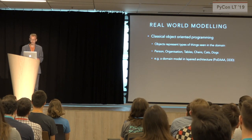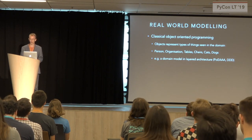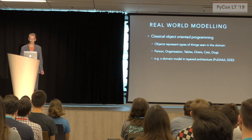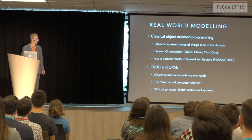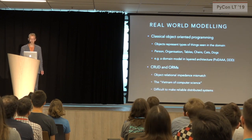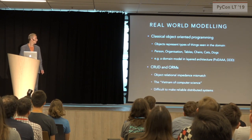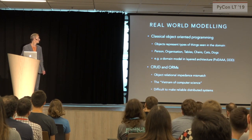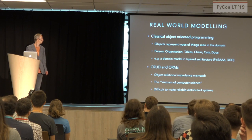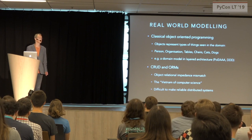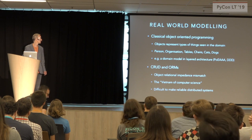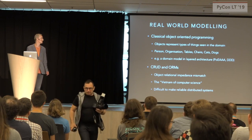In classical objects-oriented programming, we have been modeling the objects that we see in the world, such as people, organizations, tables, chairs, cats, dogs. We have the 'has-a' and 'is-a' relations. We have CRUD and ORMs. We have problems with that called the Object Relational Impedance Mismatch. There's a huge Wikipedia page all about that, and it's been described as the Vietnam of computer science, because you just go there and die.